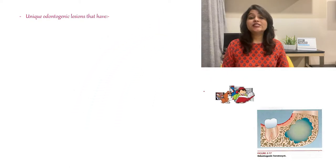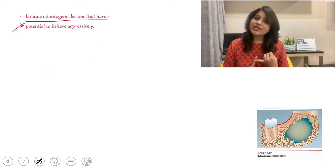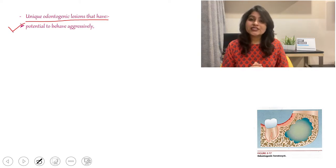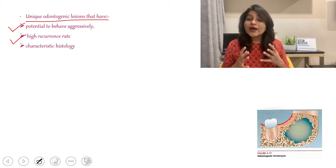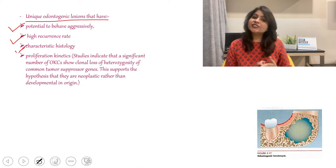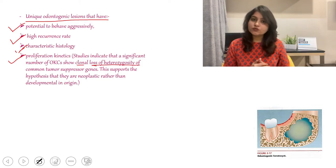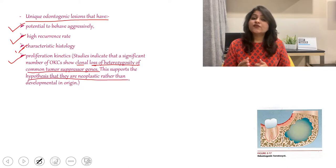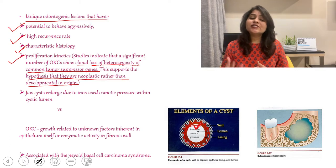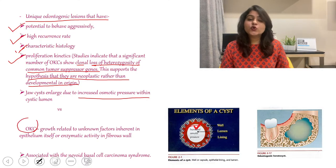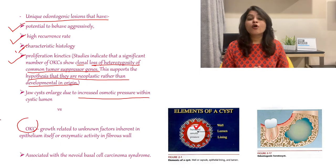OKC is the most interesting jaw cyst due to certain unique features. First, it behaves aggressively compared to other odontogenic cysts. Second, it has a high recurrence rate. Third, it has a very characteristic histopathology. Fourth, regarding proliferation kinetics, many studies indicate that OKC shows clonal loss of heterozygosity of common tumor suppressor genes, indicating neoplastic behavior. Fifth, unlike normal cysts that grow due to increased osmotic pressure, OKC grows due to inherent features within the epithelial lining and enzymatic activities within the connective tissue capsule.